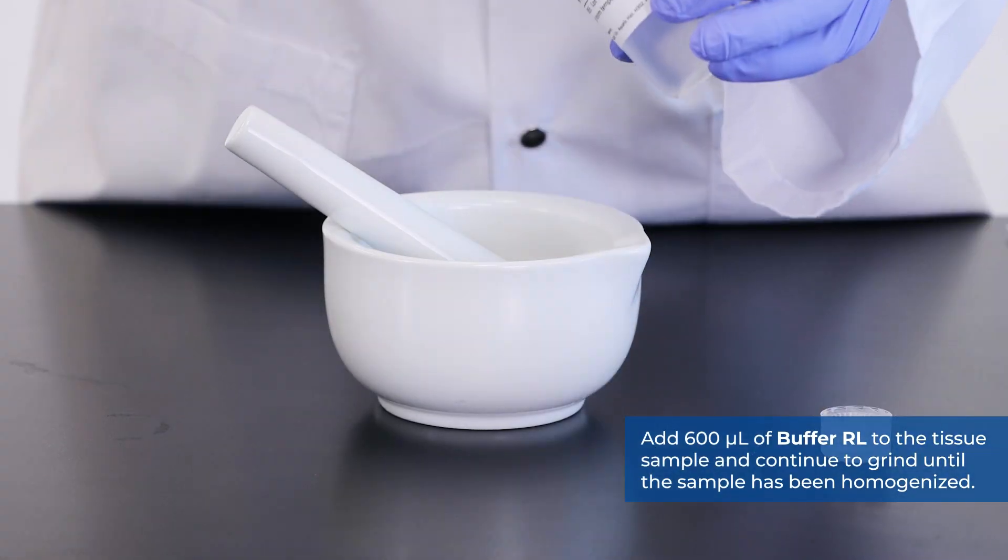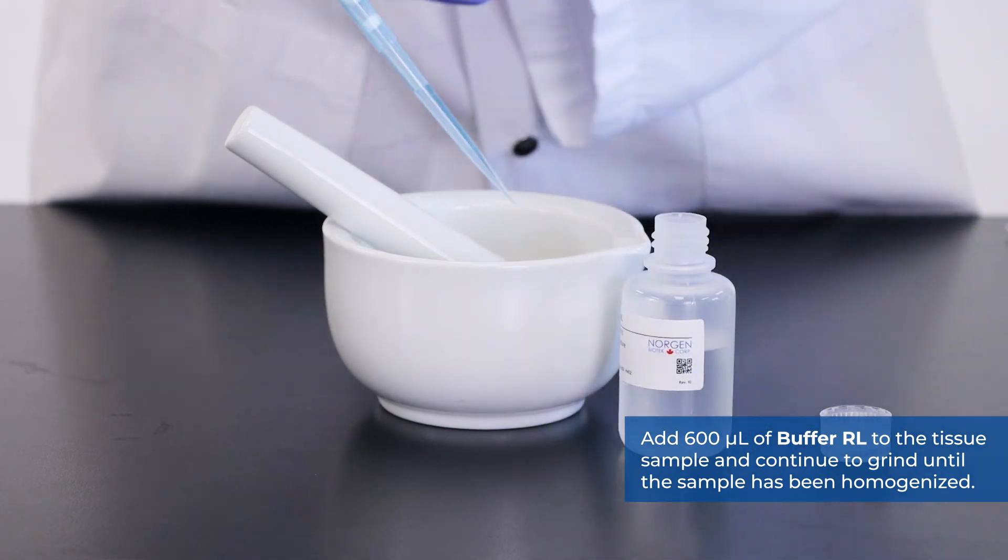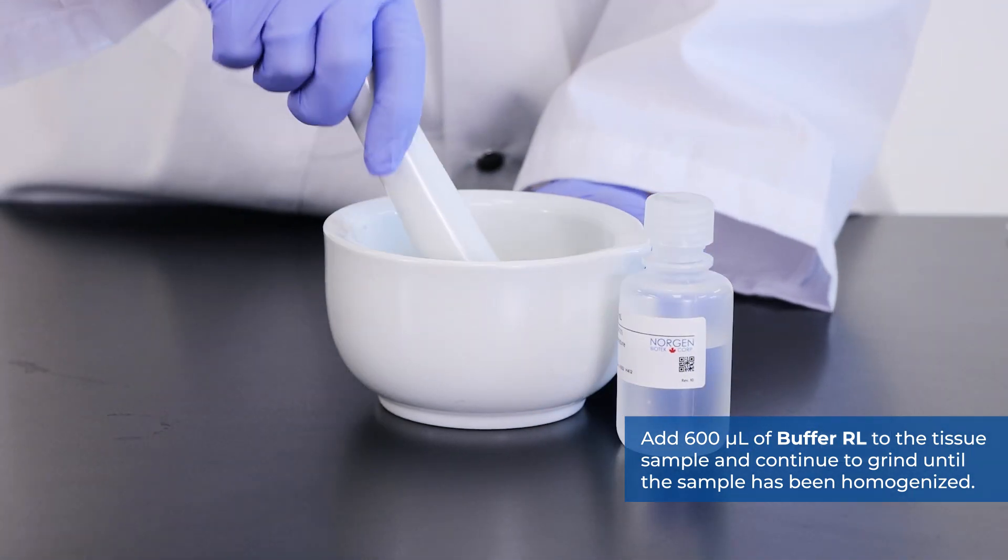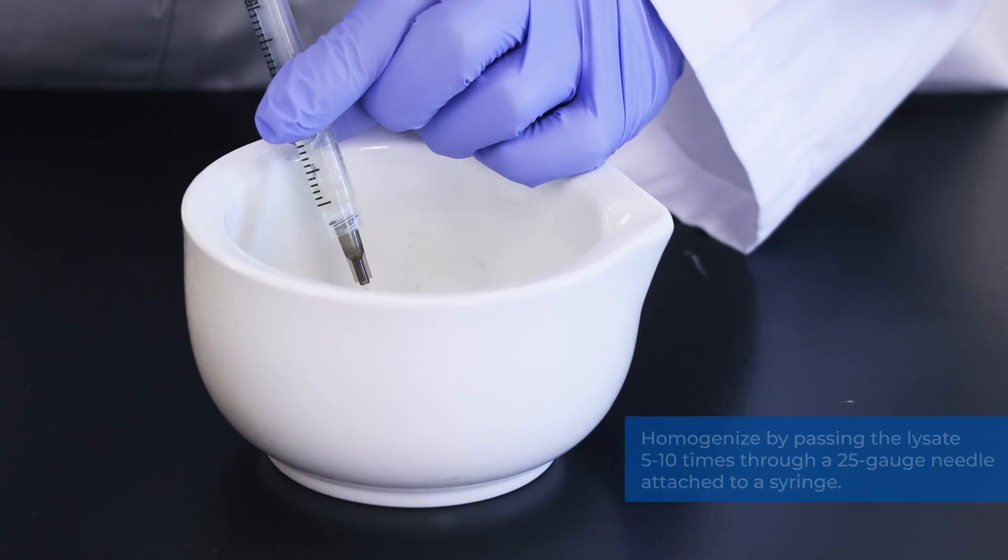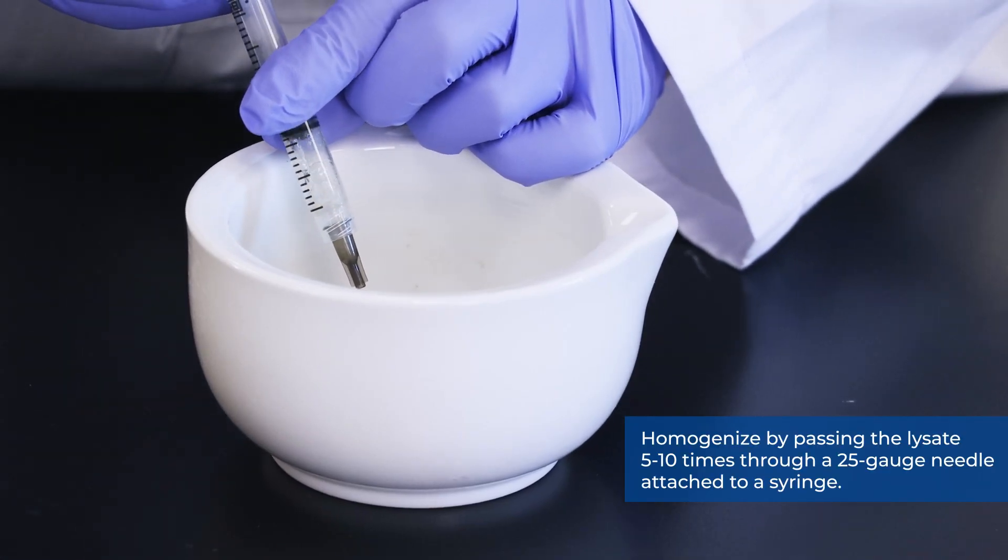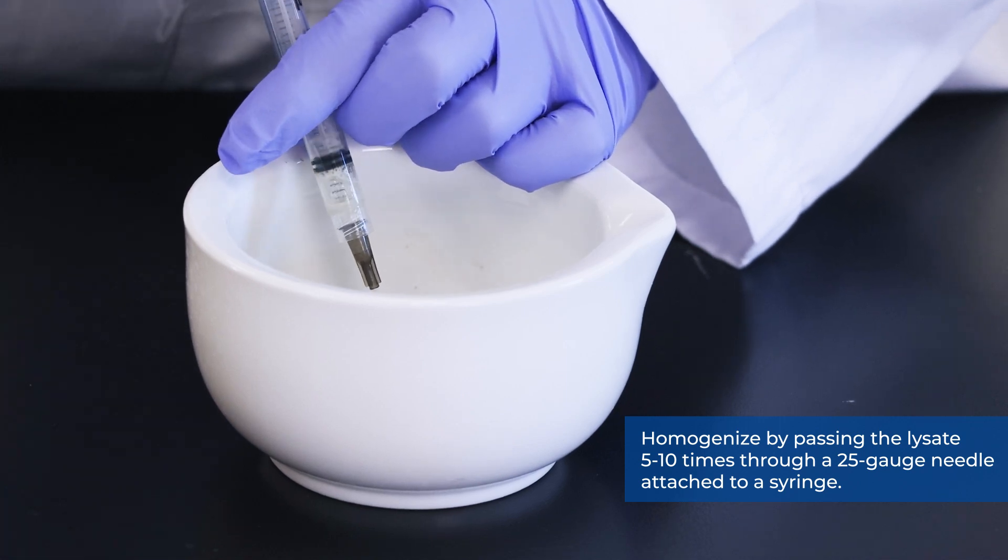Add 600 microliters of buffer RL to the tissue sample and continue to grind until the sample has been homogenized. Homogenize by passing the lysate 5-10 times through a 25-gauge needle attached to a syringe.